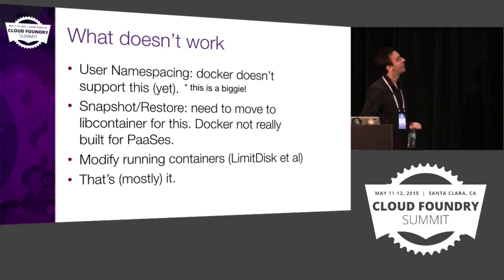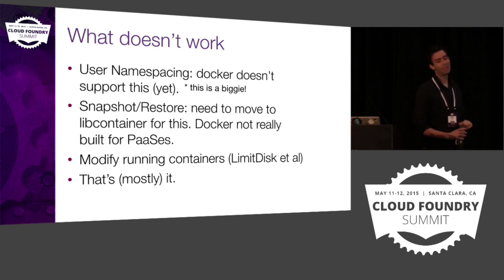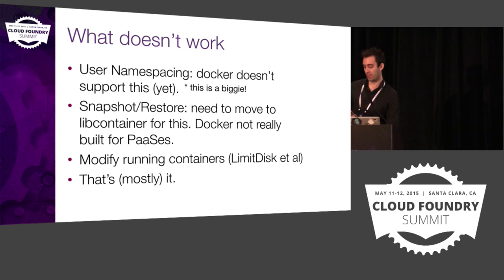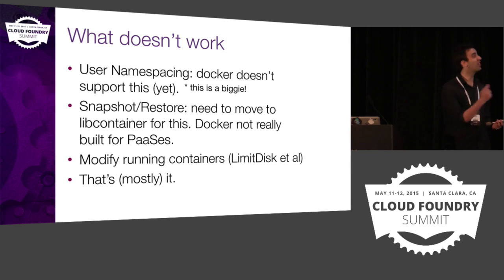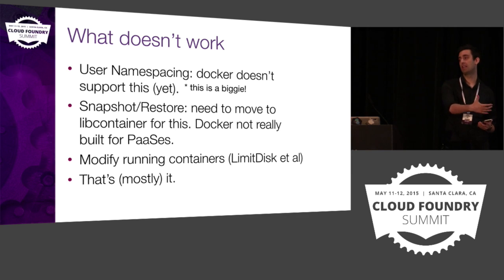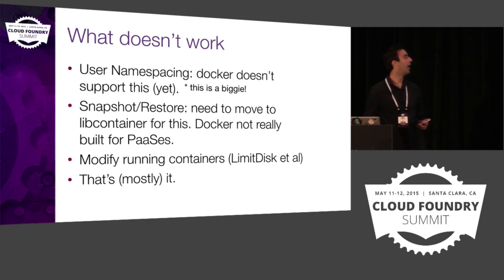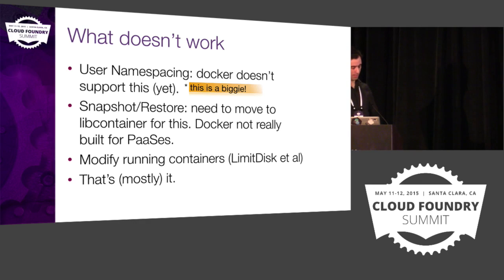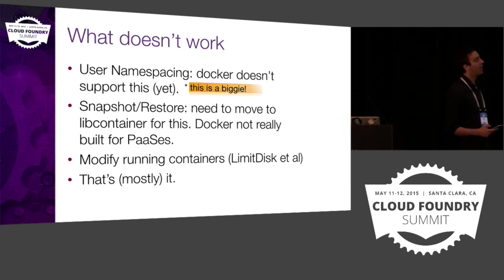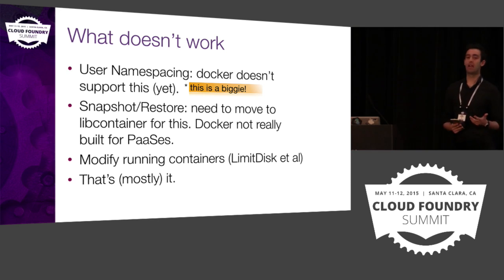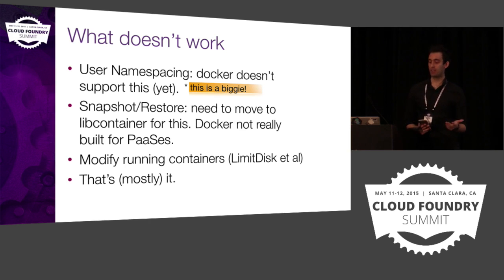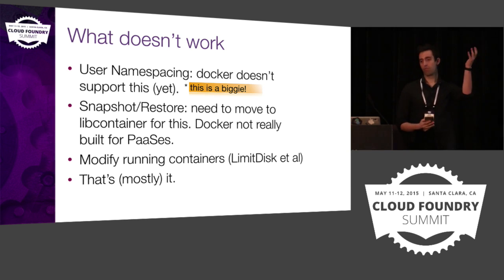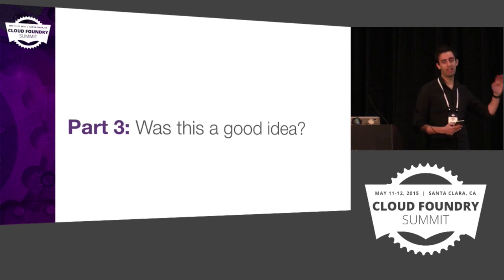What doesn't work? User namespacing doesn't work. User namespacing is one of the ways we can run multi-tenant applications properly. Unfortunately Docker doesn't support this yet — this is an example of a feature Garden has prioritized because we need to run these in multi-tenant environments. We don't have that feature in Docker yet, which is kind of a biggie, that's actually kind of a problem. Snapshot restore — one of the great architectural features of Garden is that if Garden needs to be updated or the process goes down, all the containers keep running and we reattach to them. That doesn't work with Docker, because you've got this long-running Docker daemon.